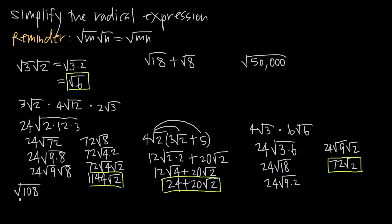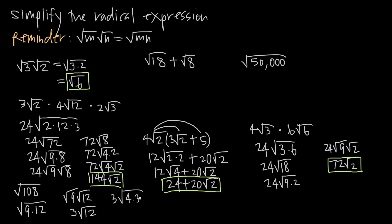Next example: simplify the square root of 108. Since 108 is 9 times 12, we write the square root of 9 times 12, then break it into square root of 9 times square root of 12. The square root of 9 is 3, giving us 3 square root of 12. Then since 12 is 4 times 3, we write 3 times square root of 4 times 3, which breaks into 3 times square root of 4 times square root of 3. The square root of 4 is 2, so 2 times 3 gives us 6, and our final answer is 6 square root 3.